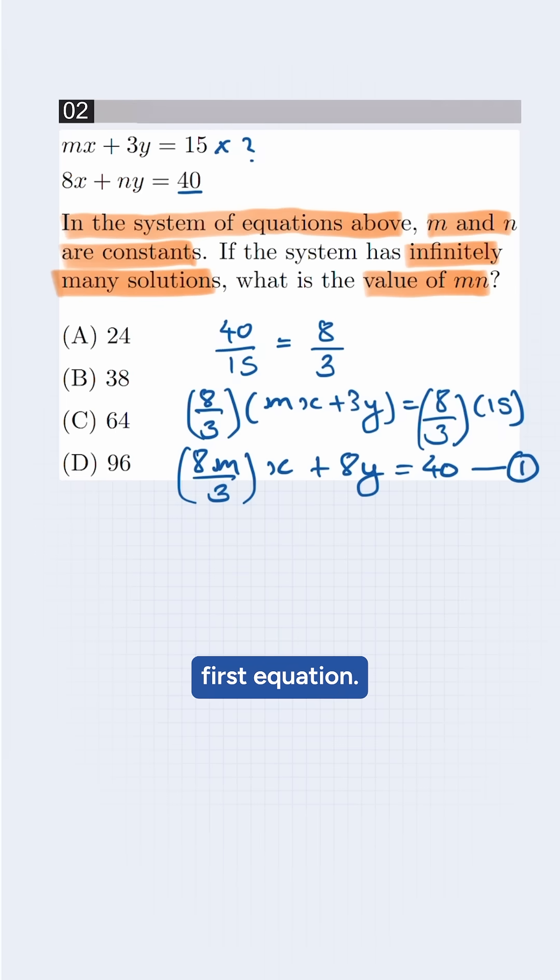This will be our new first equation. And the second equation is 8x plus ny is equal to 40.